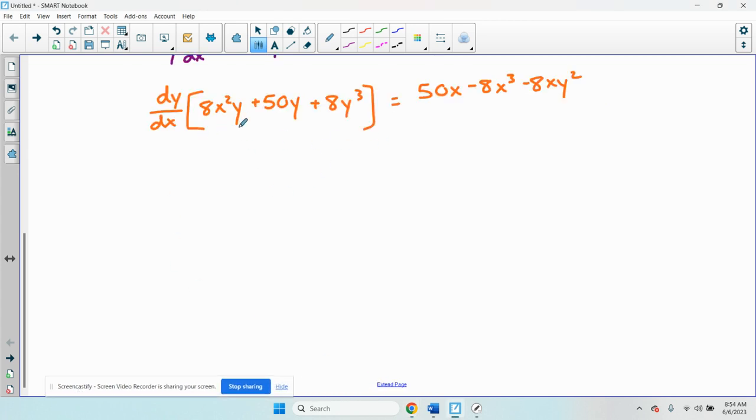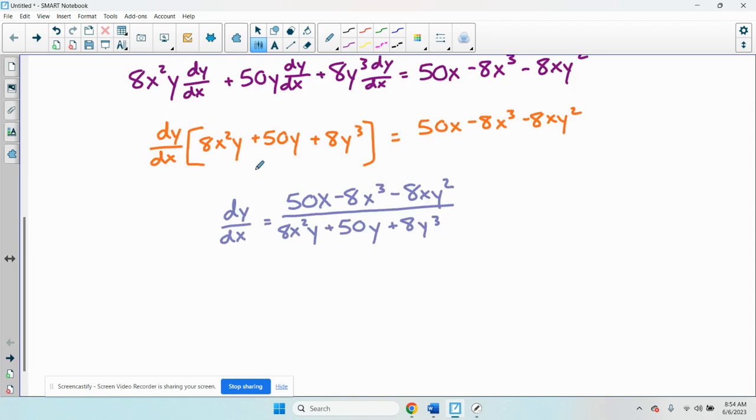And the very last step is to divide by everything in the brackets. So I have dy dx equals 50x minus 8x cubed minus 8xy squared over 8x squared y plus 50y plus 8y cubed. That's our derivative, quite a trip.